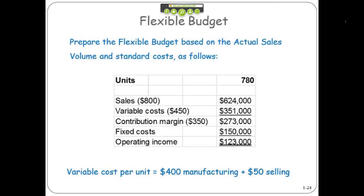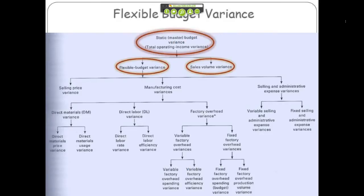The flex budget says we should have had operating income of $123,000 at this sales level, all other things being equal. That's what the flexible budget says. So we can now start to do some more variance analysis.